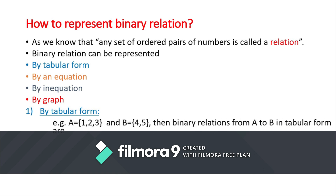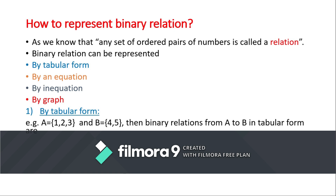Number one: by tabular form. As we learnt in the previous lecture, if we have any two sets, we can easily form their Cartesian product, and we can take from that Cartesian product the binary relation. Here we have two sets A and B containing some elements. The order of A is 3 while the order of B is 2. Some relations from A to B are given, and you can see that these relations are tabulated in a set — that's why it is called binary relation in tabular form.